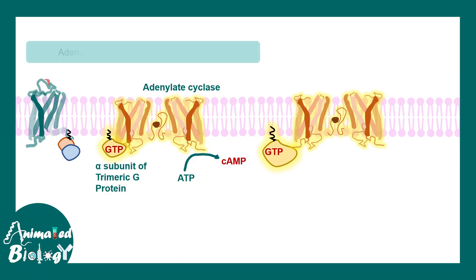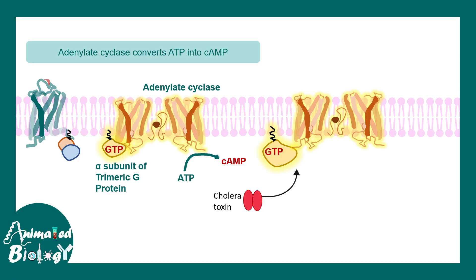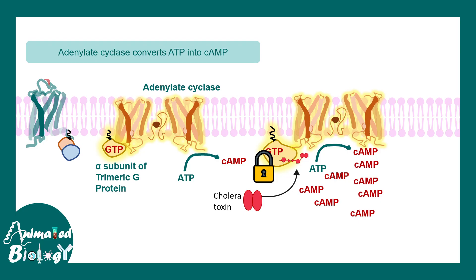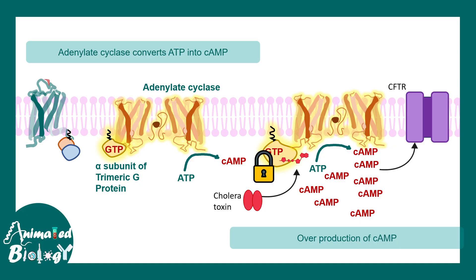Adenylate cyclase converts ATP to cyclic AMP under normal conditions. Sometimes GPCR signaling goes wrong in disease. One example is Vibrio cholerae infection: cholera toxin makes the G alpha subunit constitutively active, meaning it is always active. That leads to several rounds of cyclic AMP production. When cyclic AMP concentration is too high, it leads to opening of channels such as CFTR that allow chloride to diffuse out, creating an ionic imbalance that causes water to also move out — this creates the diarrhea seen in cholera.